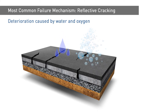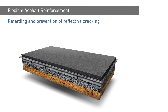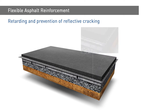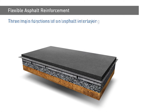One effective and time-tested solution of significantly retarding and preventing reflective cracking is the use of flexible asphalt reinforcement. An asphalt interlayer can fulfil three main functions and, depending on the application, one or several of these may be met by a single product.